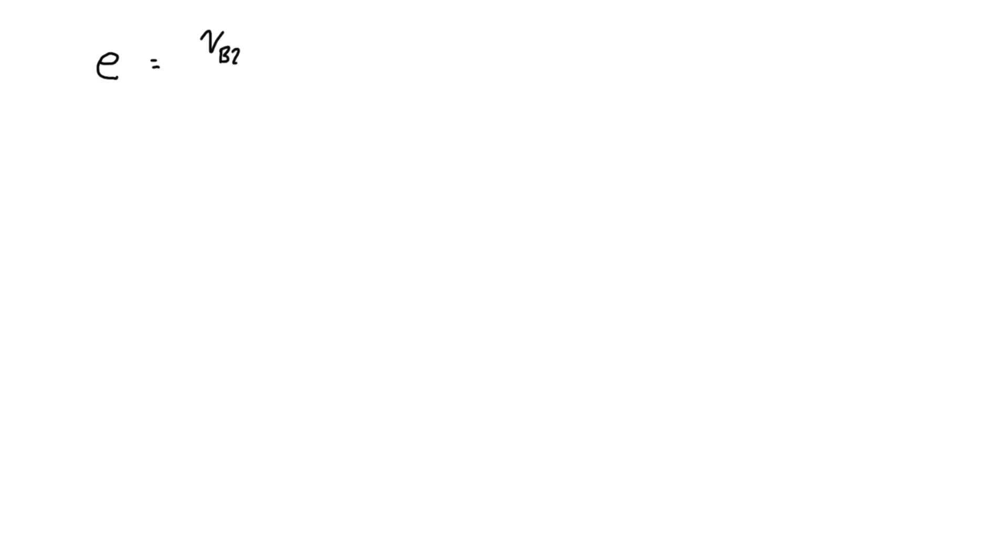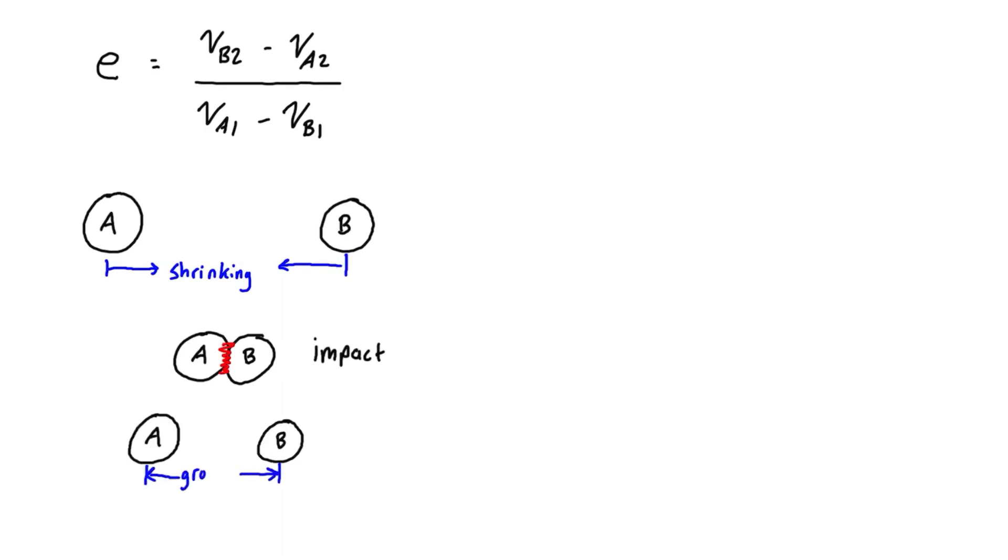So this is for two bodies A and B that are going to have an impact. Let me just draw that out right here. If we take the right as the positive direction in all cases here, then in order for A and B to have an impact, then v_a1 must be bigger than v_b1.